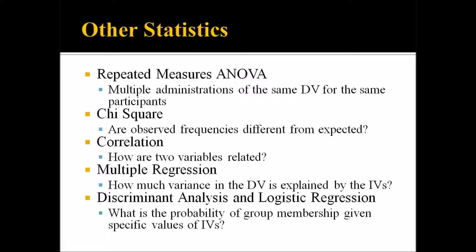Looking at some other popular statistics: first, we have repeated measures ANOVA. This is where you have multiple administrations of the same dependent variable or measure for the same participants. An example would be a study that went on for four years, during which you tested the same participants with the same instrument eight different times. In that situation, you would use repeated measures ANOVA.